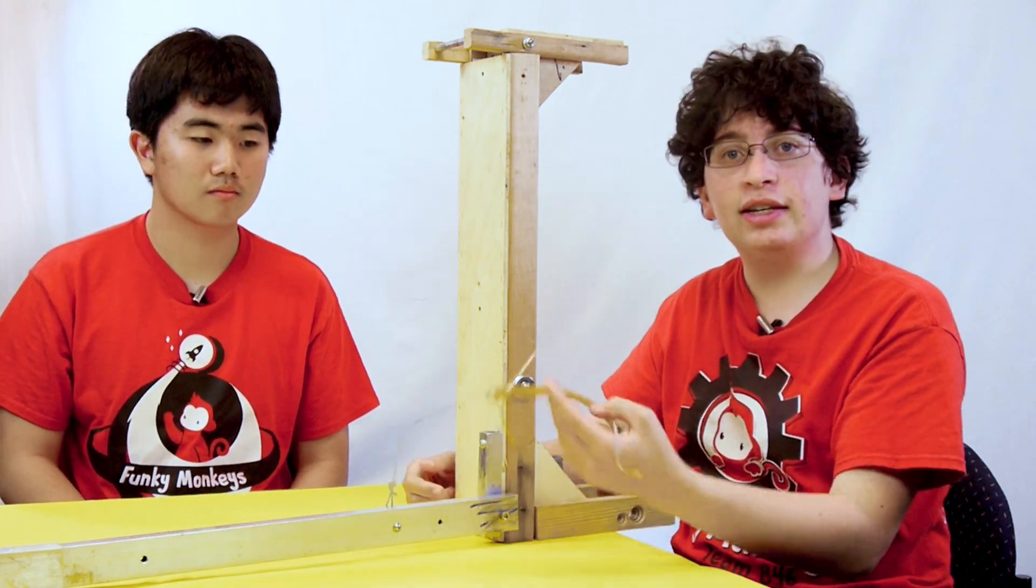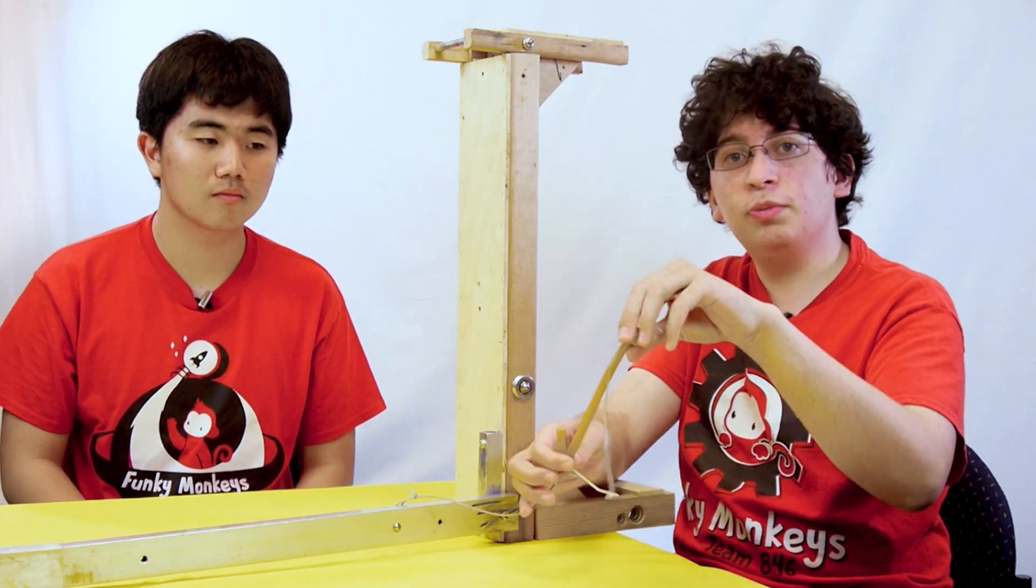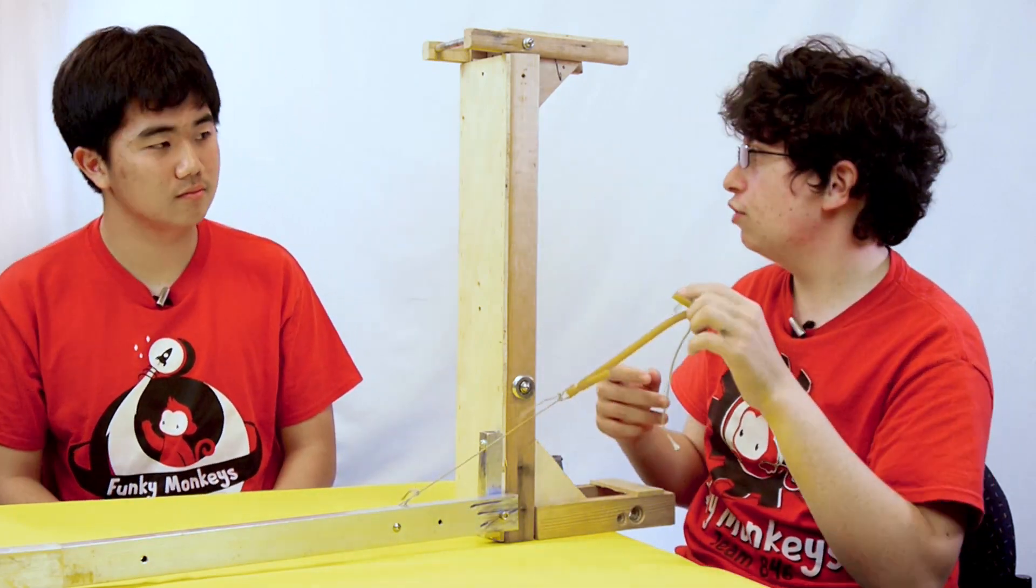Then you find the maximum distance between this attachment point and your vertical attachment and divide that by your spring stretch factor and you can get the initial length of the spring, which then you can just get a piece of surgical tubing, cut it to that length, and attach it to your robot.